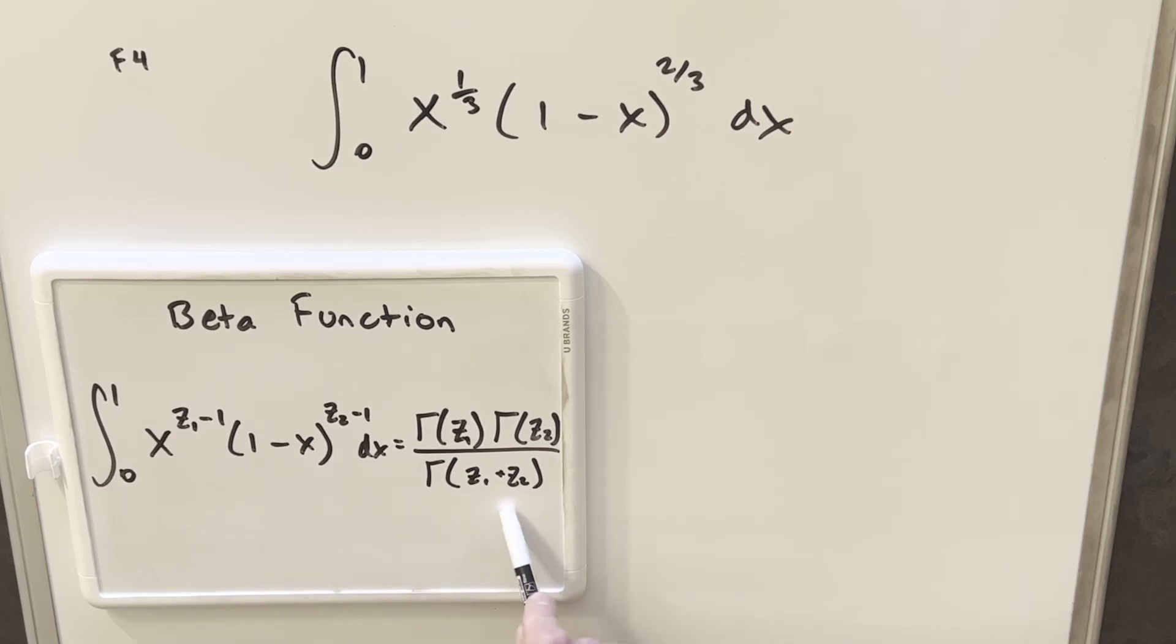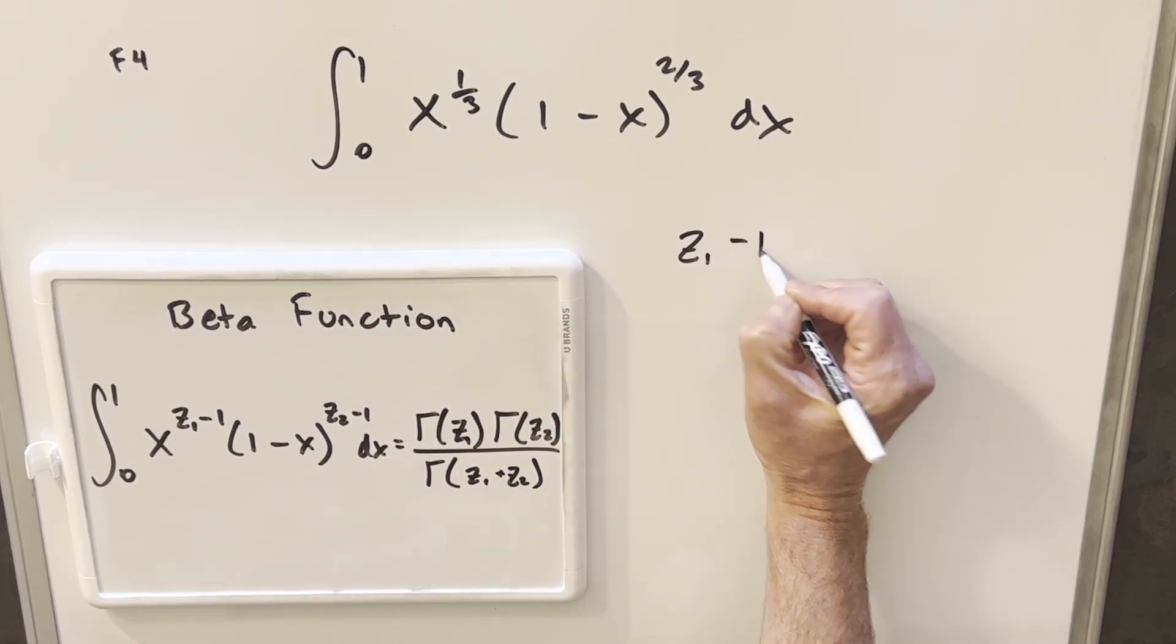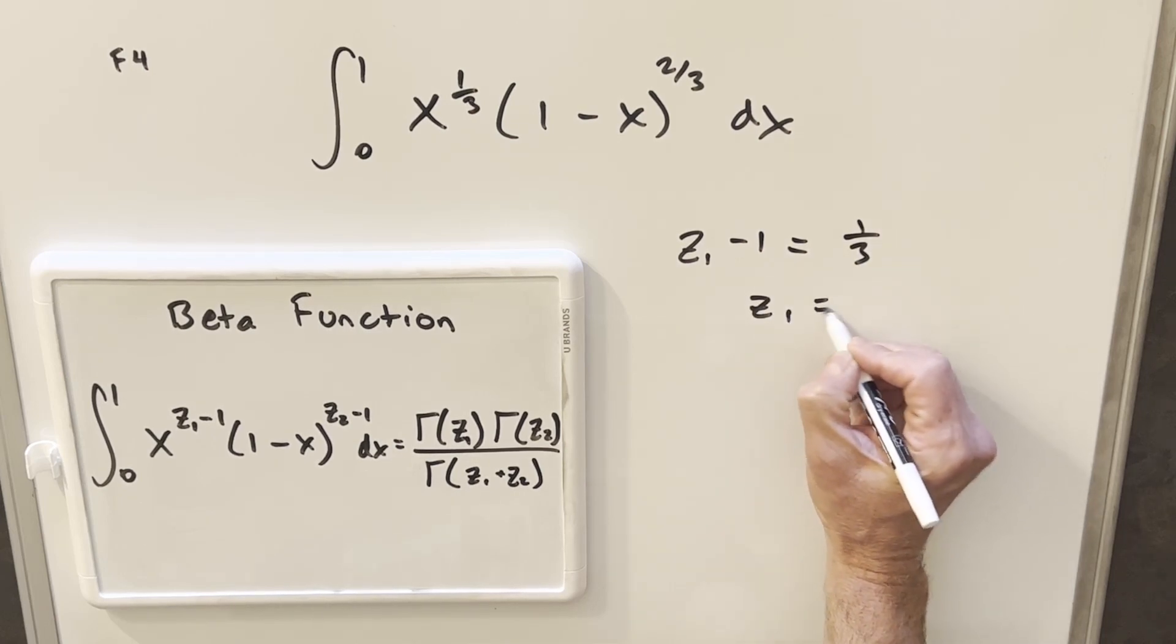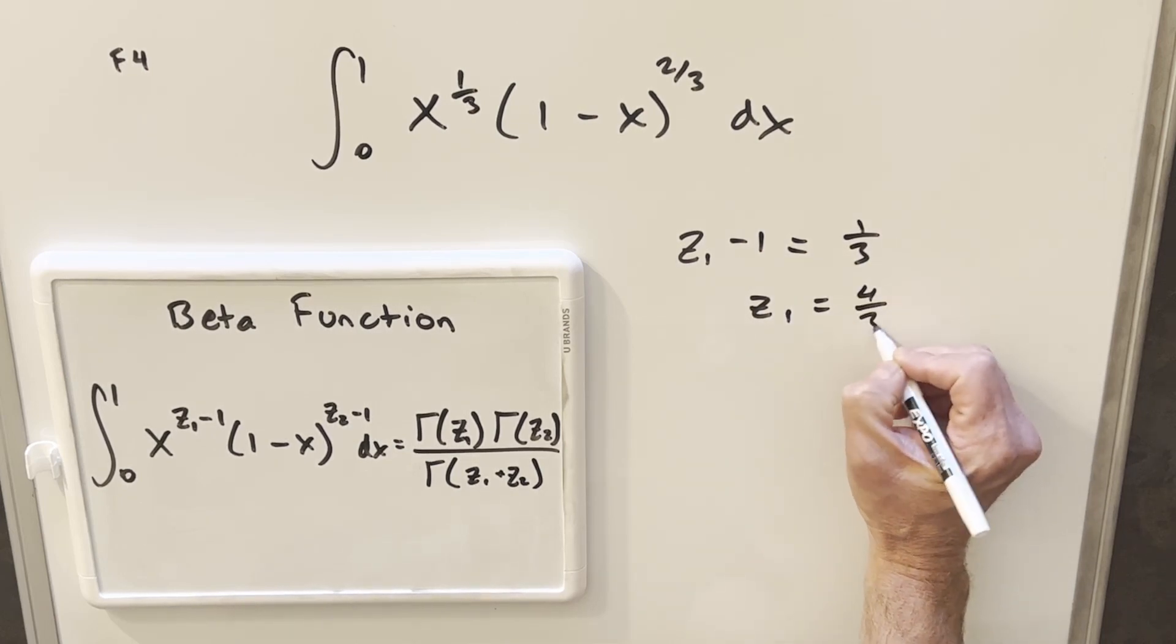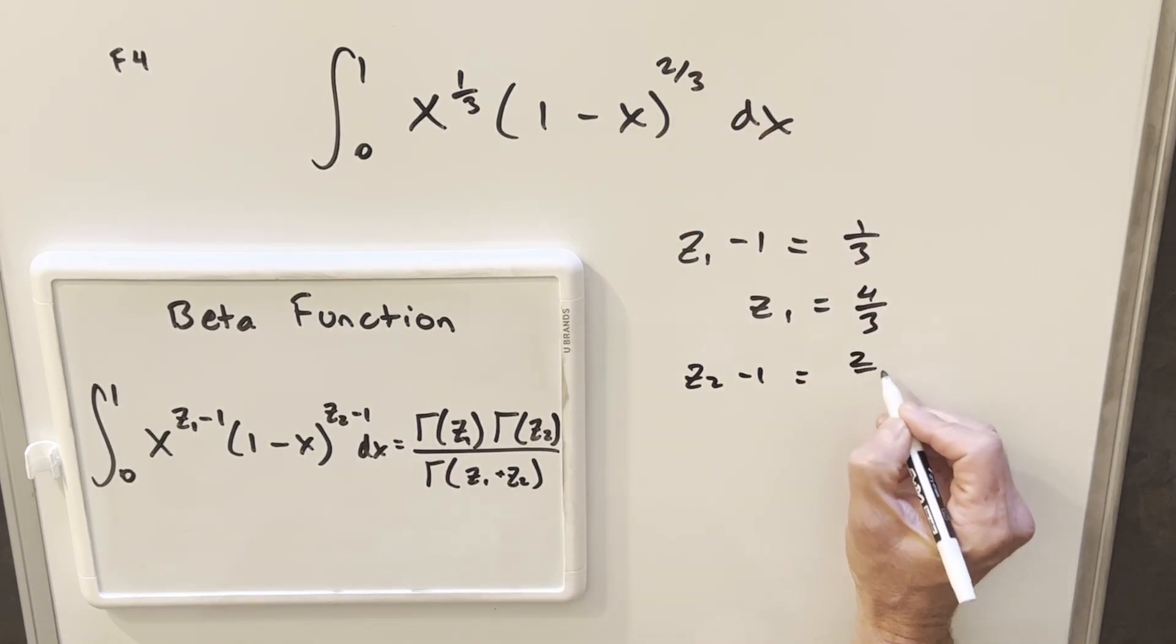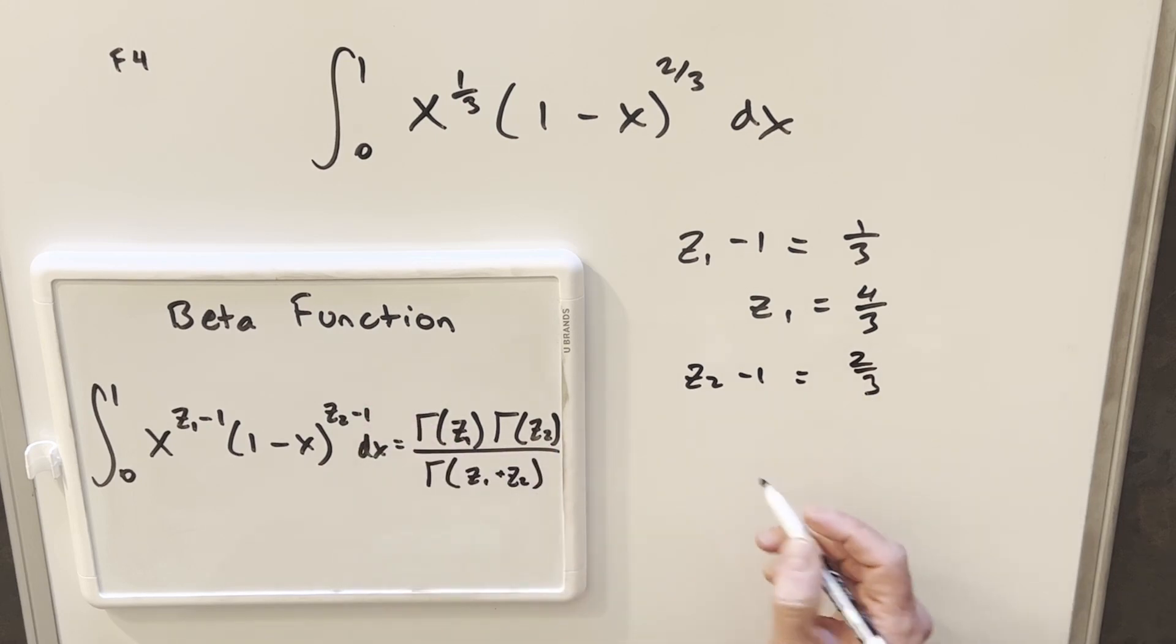All we're going to need in order to start calculating a solution is going to be the z1 and z2 values, and we can get this from the exponent. If we look at 1/3 for our first exponent, we're saying that z1 minus 1 is going to be equal to 1/3, and that's going to tell us that z1 is equal to 4 over 3. And then doing the same thing, if z2 minus 1 is going to be this exponent 2/3, then z2 is going to be equal to 5 over 3.